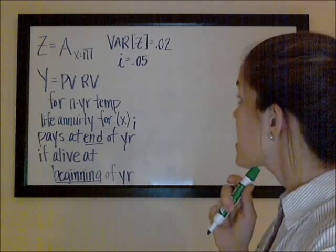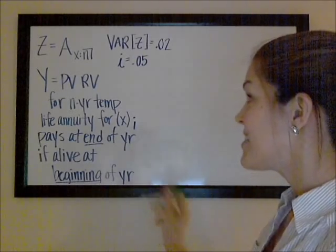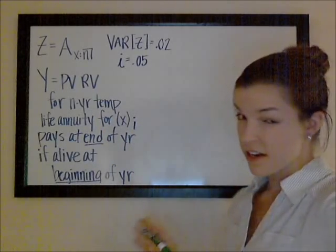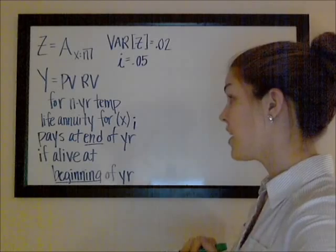So there's no bar over the A, and that Y, that is kind of tricky, that Y is the present value random variable for an end-year temporary life annuity on X.